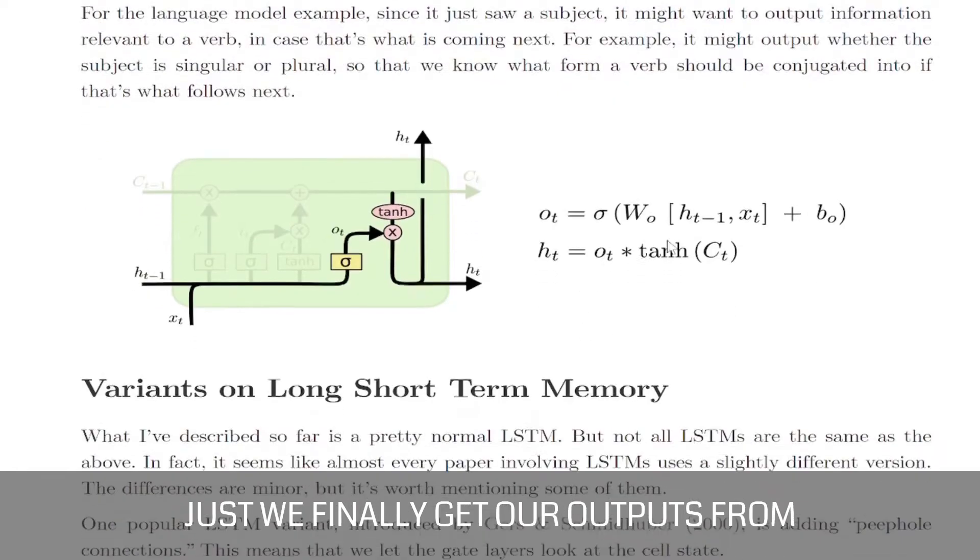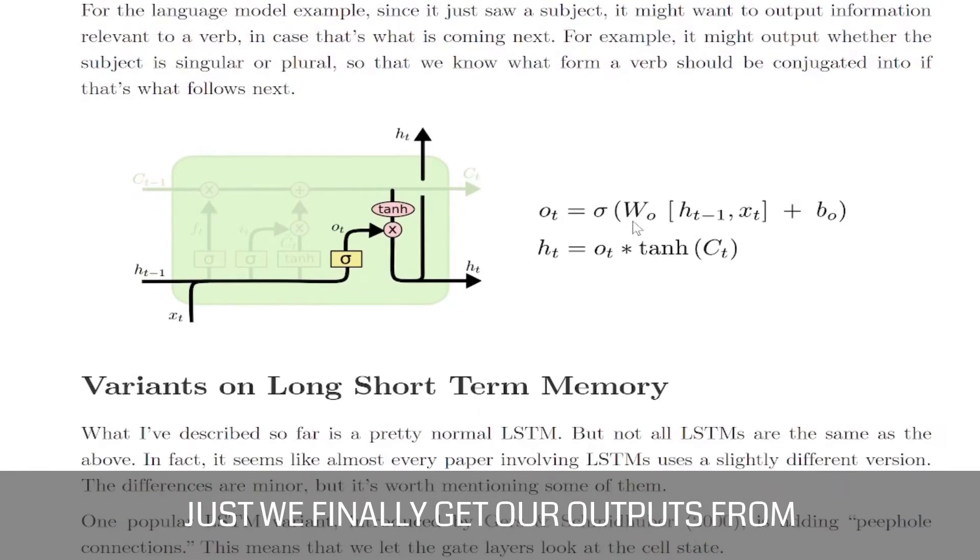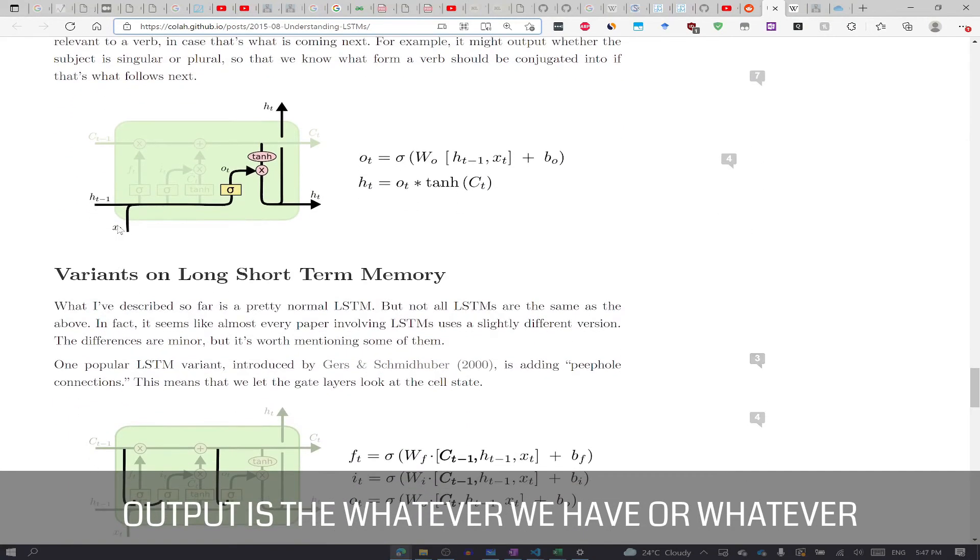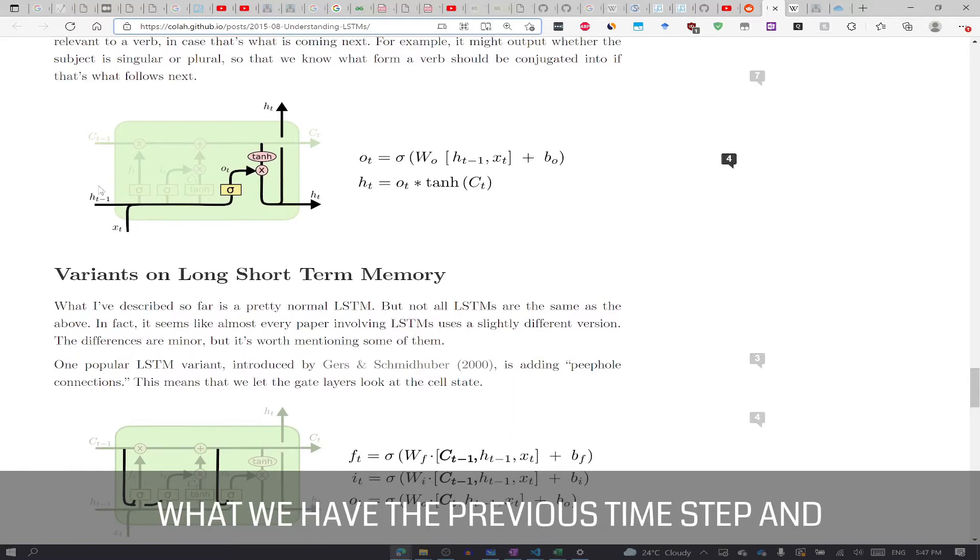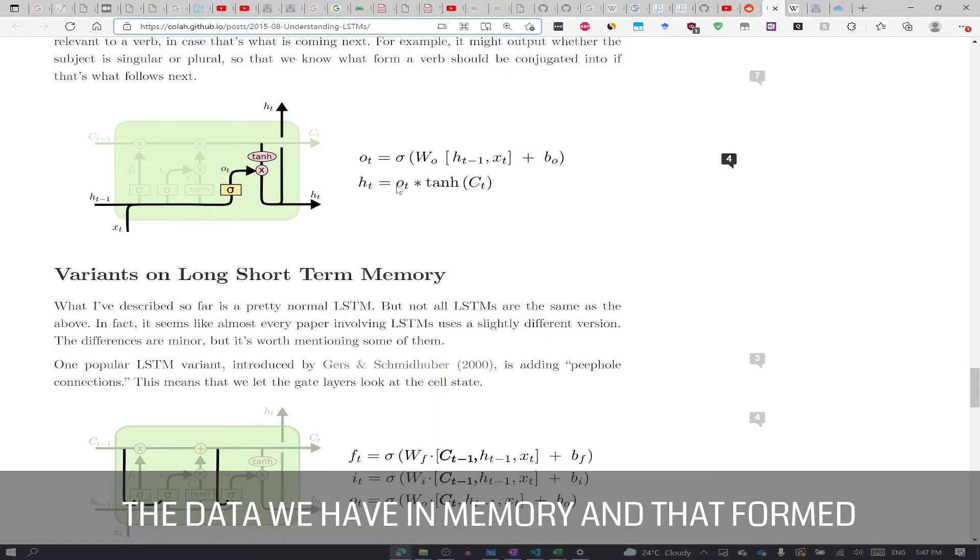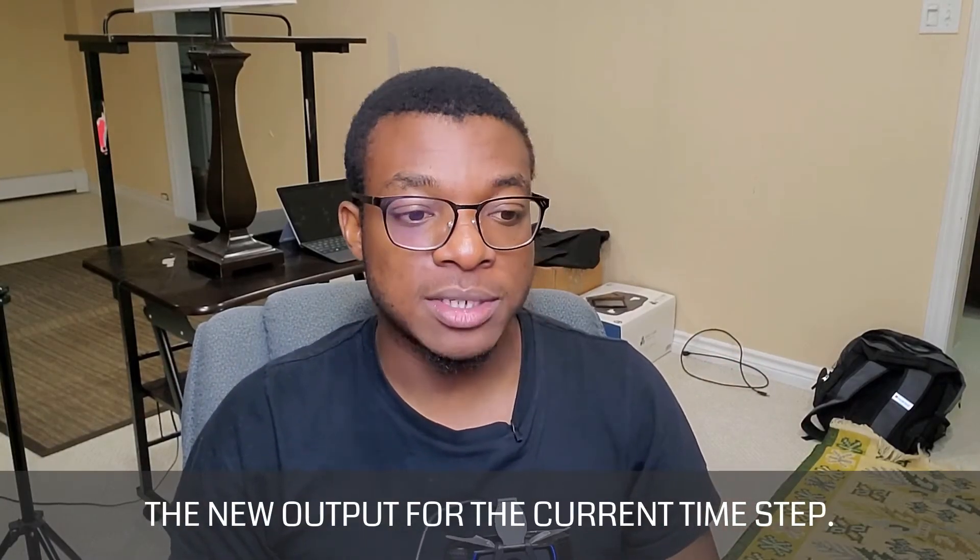So then finally, what we do is then we just find, we find to get our outputs from this current time period. So the output is the, whatever we have or whatever we input it to this time step, plus what we had previous time step. And that's OT and then what we're doing is we're now combining it with the cell state, with the data we have in memory. And that forms the new output for the current time step.